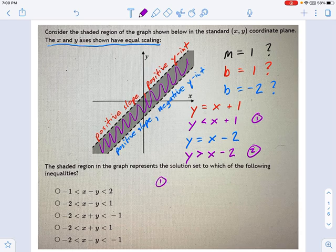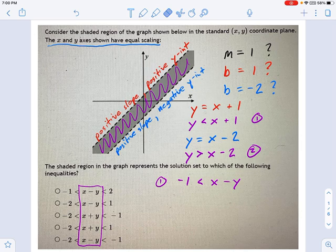Instead of y less than x plus 1, I'm going to rearrange that. I'm going to say negative 1 less than x minus y. See, I just subtracted 1 from each side, subtracted y from each side, and I got this. You might wonder, why did you subtract y from each side instead of just subtracting x from each side? Well, I know I want to get something like these, which is x minus y or x plus y. So I'm going to keep it in that form, make it easier to compare later on.